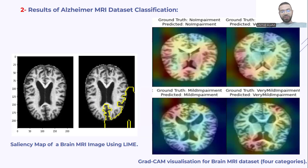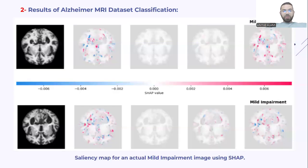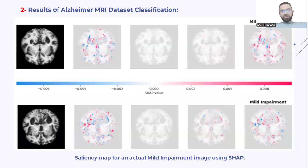We have the same technique applied and the same type of response. Here we have the SHAP visualization, where we can clearly see that SHAP explains the classification much better for each impairment category, with the red area and the blue area clearly delineating the significant regions.